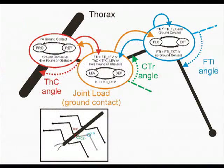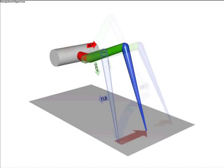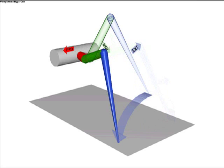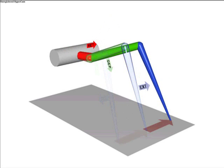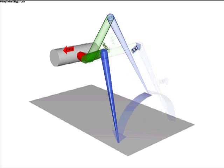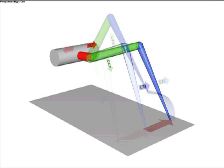A computationally simple leg joint control method has been observed in stick insects that can easily be implemented for use in small robots with low computation capabilities. This method determines the direction and speed of each leg joint to develop an emergent walking motion. Each joint's direction is determined by sharing sensory information with other joints in the leg.